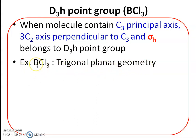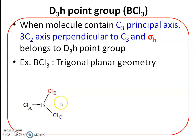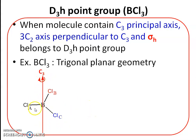In boron trichloride the Cl–B–Cl angle is 120°. The three chlorine atoms are equivalent but are labeled A, B, and C for identification. The C3 principal axis passes through the boron atom and is perpendicular to the plane of the molecule. Since BCl3 is planar, all four atoms lie in the same plane, and the C3 axis is at right angles to that plane.